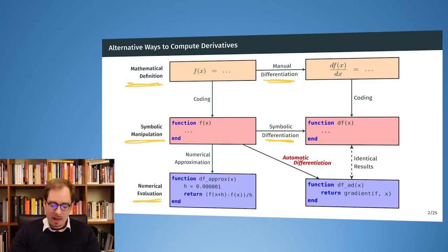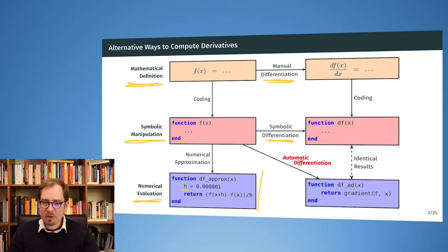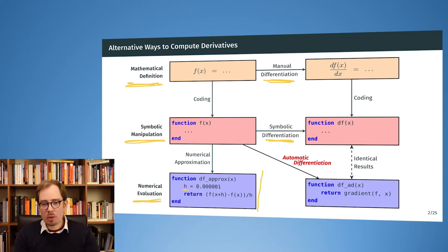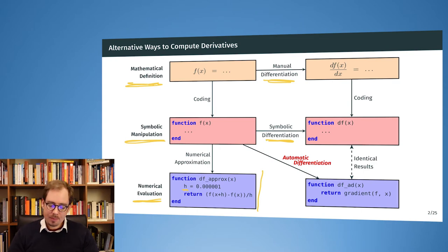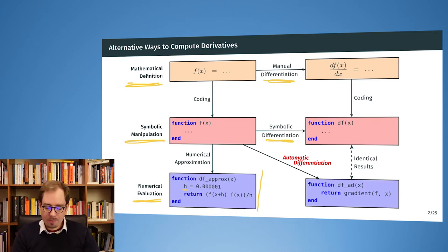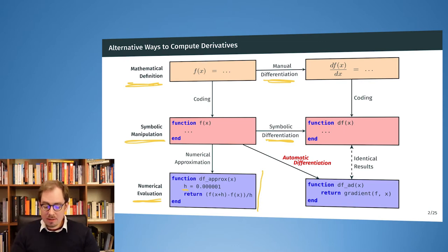On a third level, we can numerically evaluate the algorithm using finite differences: taking the definition of the gradient and applying a very small step h to numerically approximate the derivative. We just need the computer code for the function, evaluate at two close points, and get the derivative. However, this is only an approximation and we may lose some precision. There is actually another way to evaluate the function that gives the precise gradient — and that is the magic of automatic differentiation.